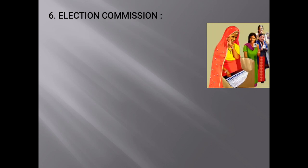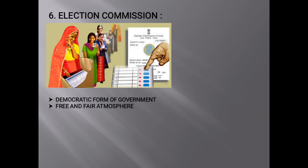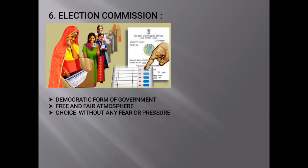Lastly, we learn about the Election Commission. You must have read about the Election Commission in the newspapers. Since India has adopted a democratic form of government, people have to elect their representatives periodically. For this, elections have to be conducted in a free and fair atmosphere so that citizens can elect a candidate of their choice without any fear or pressure. If the government were to conduct elections, there might be no guarantee of such a free, fair, and just atmosphere. Hence, the Constitution has entrusted the responsibility of conducting elections to an independent body.